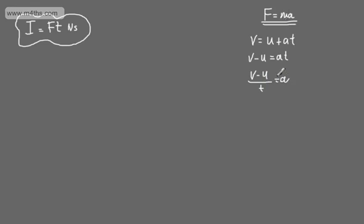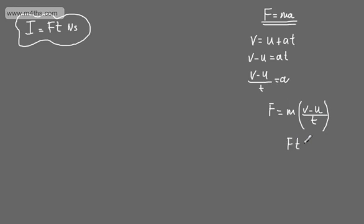I'm going to sub this back into F is equal to ma. So F is equal to m, and instead of a we can sub in v — the final velocity — minus u, the initial velocity, over time t. Multiplying both sides by t, we've got Ft is equal to m times v minus u.